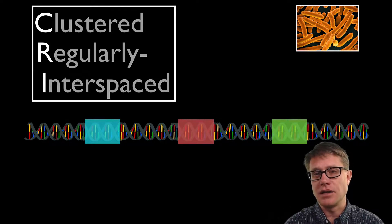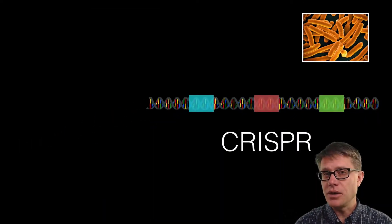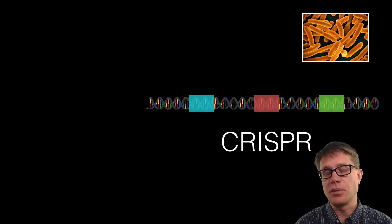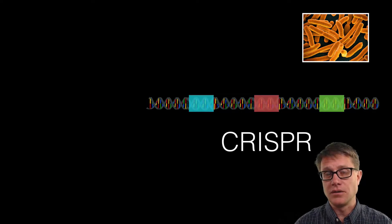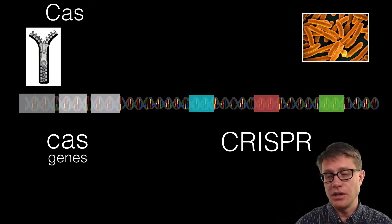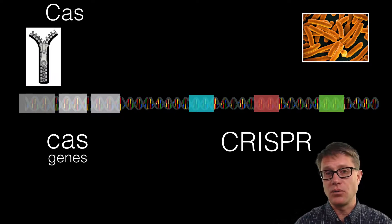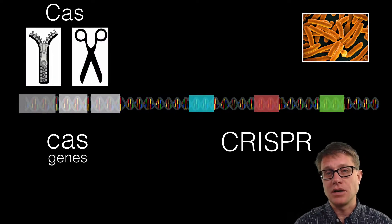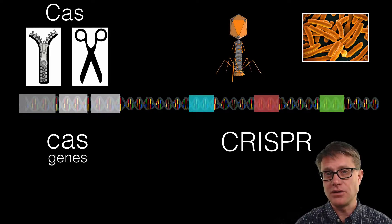This puzzled scientists when they identified this back in the 80s and 90s. But in the 2000s, what they found is that spacer DNA matches up perfectly with viral, especially bacteriophage, DNA. They also identified a number of genes associated with CRISPR — the CRISPR-associated or Cas genes. Those Cas genes make Cas proteins, which in general are helicases, proteins that unwind DNA, and nucleases, proteins that cut the DNA.